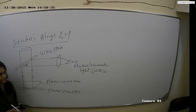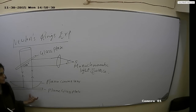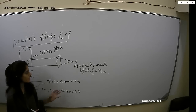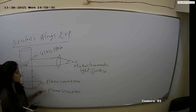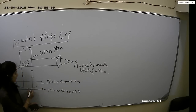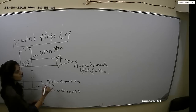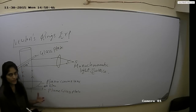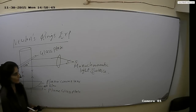This is the experimental setup of the plano-convex lens arrangement. Now, let us discuss how interference by division of amplitude takes place. When this plano-convex lens is placed on the plain glass plate, at the point of contact of the plano-convex lens and plain glass plate, an air film is formed. Light reflects from the upper and lower surface of the air film.